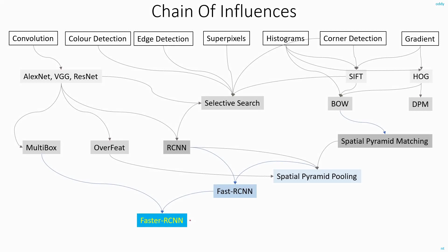In this diagram we can see the chain of influences that have eventually led to the creation of Faster R-CNN. In the first row we can see some of the basic operations that you can perform on top of images: convolution, color edges and corner detection, super pixel straddling, and calculating the histograms or gradients of the images.